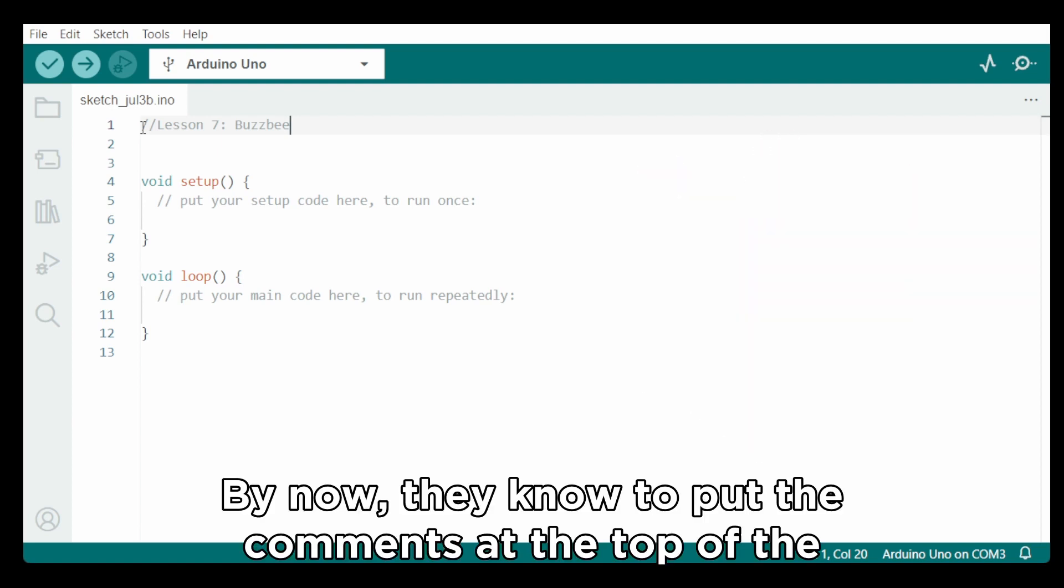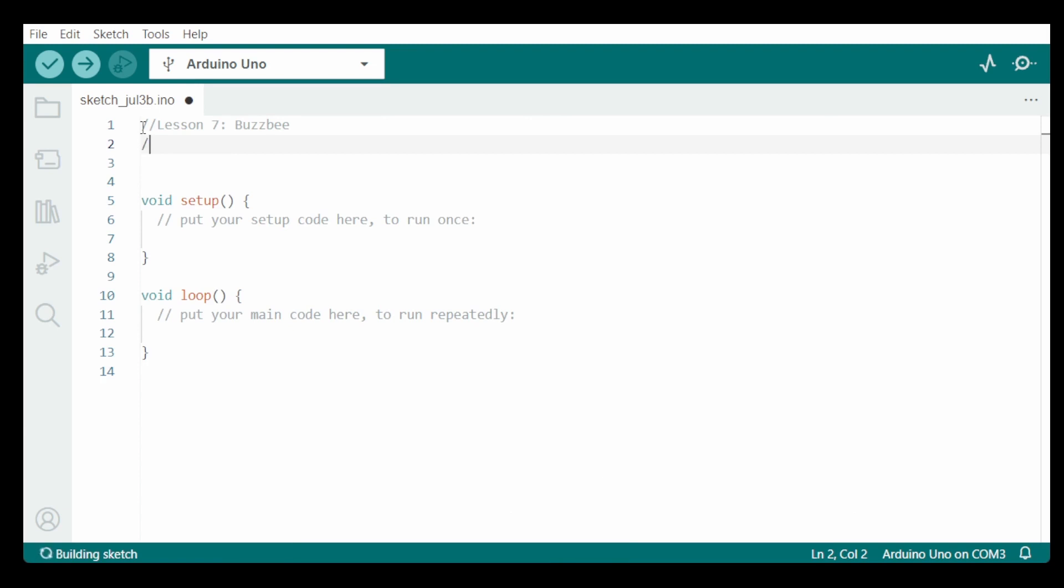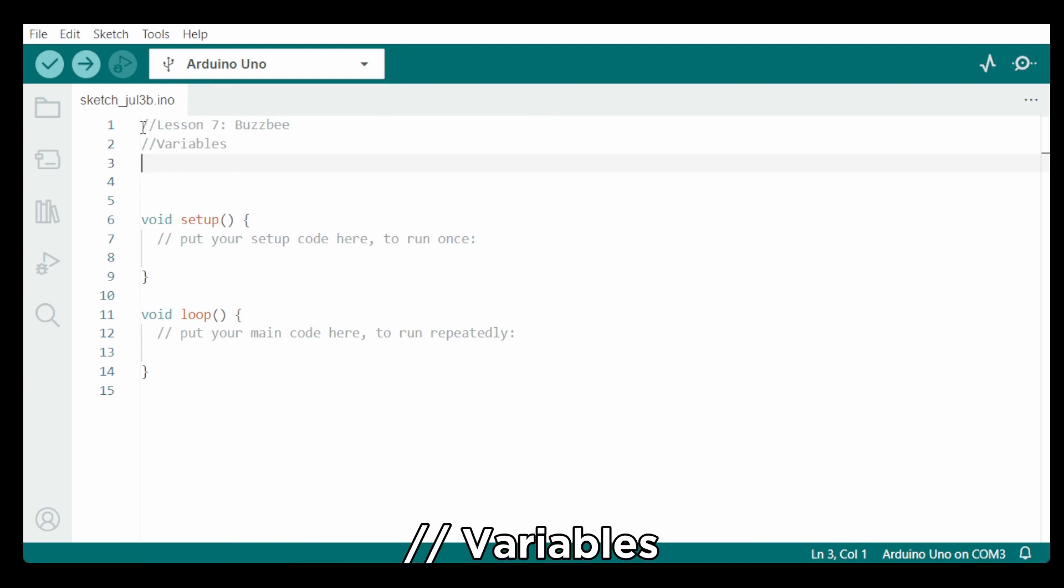By now, they know to put the commands at the top of the program and add the name of the project and the variables. Project 7, Busby, double slashes, variables.